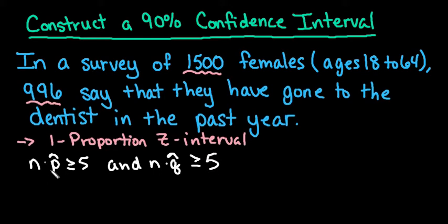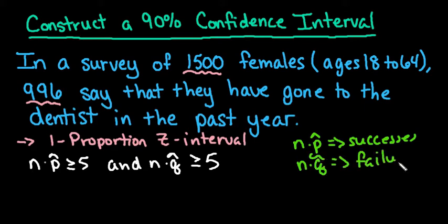n times p̂ just means the number of successes, so p̂ is our successes and n times q̂ is just our number of failures. In this case a success would be considered that they answer yes to the question they have gone to the dentist in the past year. We can see from the problem that we have 996 successes which is definitely greater than or equal to five, and n times q̂ we could find by doing 1500 minus 996, that would be our number of failures. So in this case we would have 504 failures.